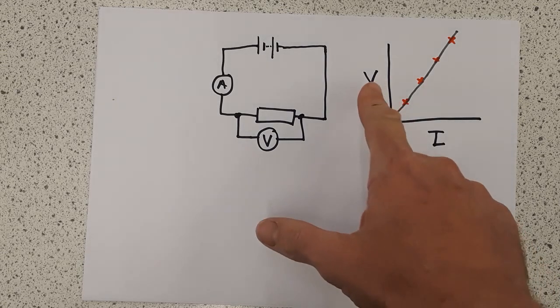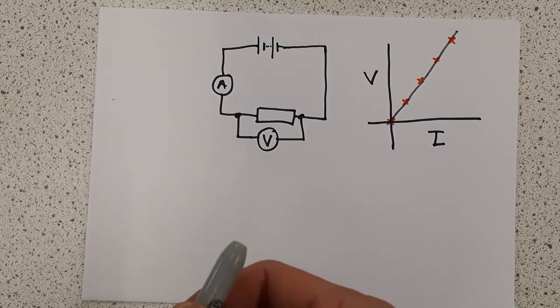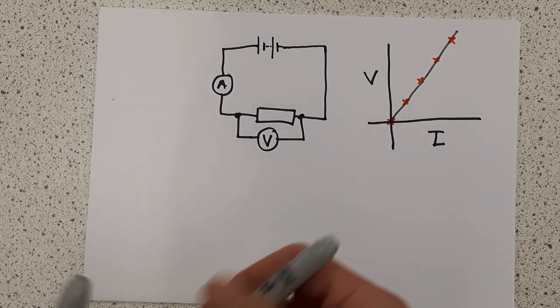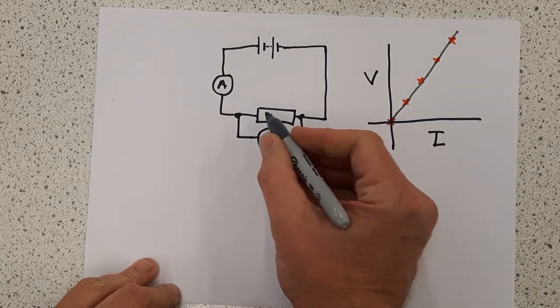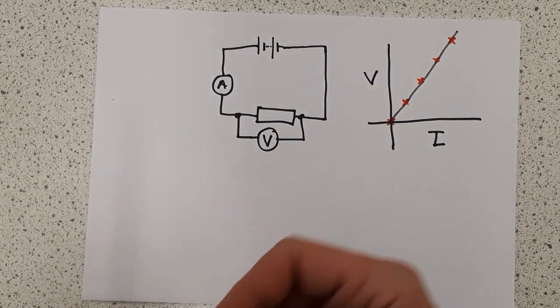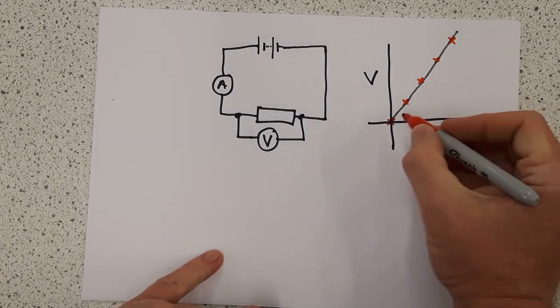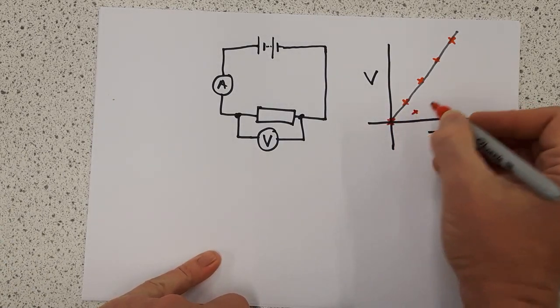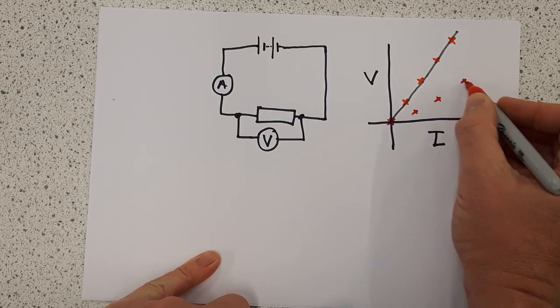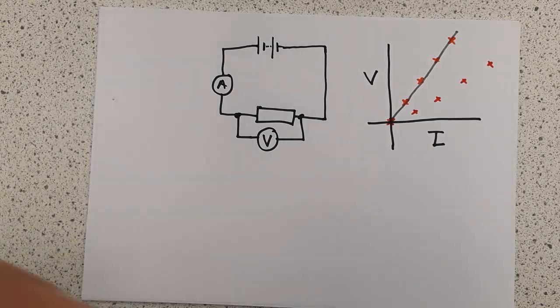Now the reason I've drawn it with voltage on the y-axis is because, let's say I redo the experiment and I change the resistor. So let's imagine I change that for a different resistor, and I do the experiment again. And what I get this time is I get a set of results, again, zero to start with.